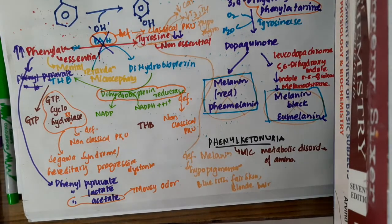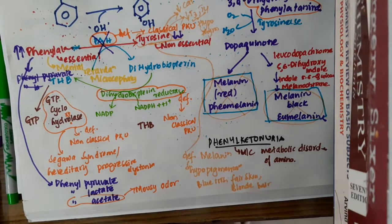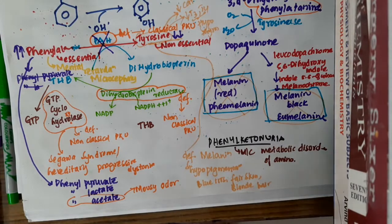Sigawa syndrome or hereditary progressive dystonia is a type of non-classical phenylketonuria that occurs due to deficiency of the enzyme GTP cyclohydroxylase.